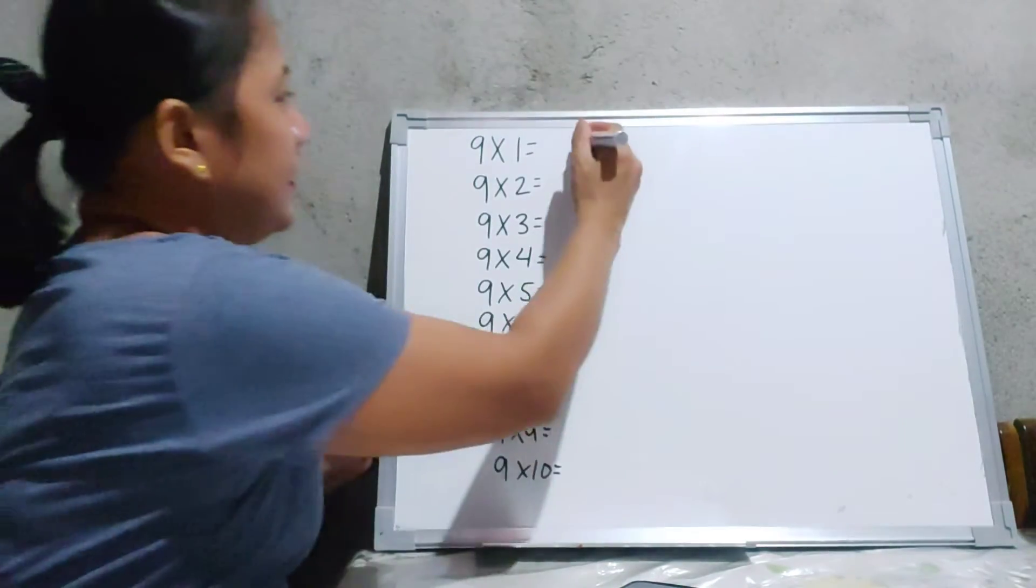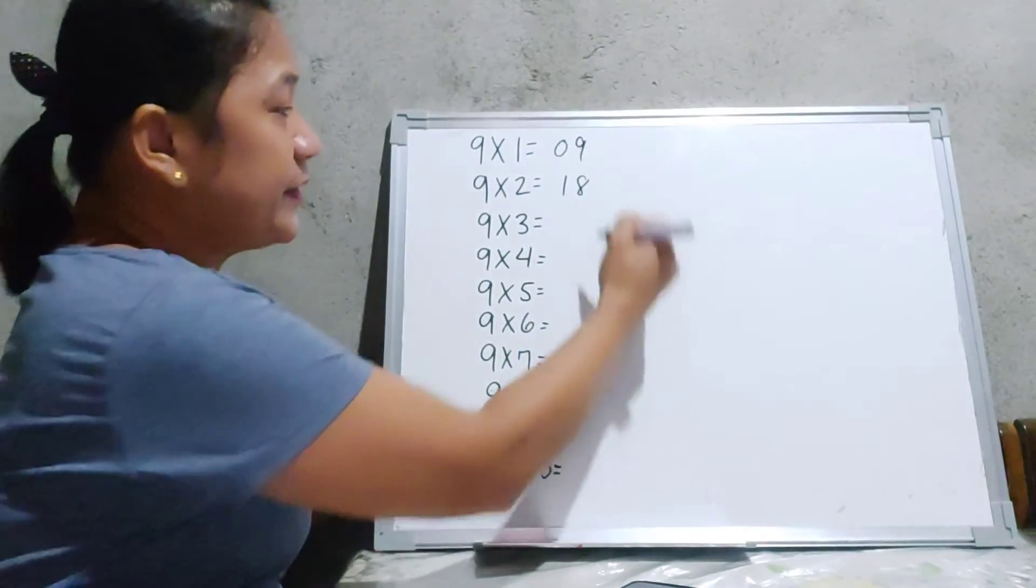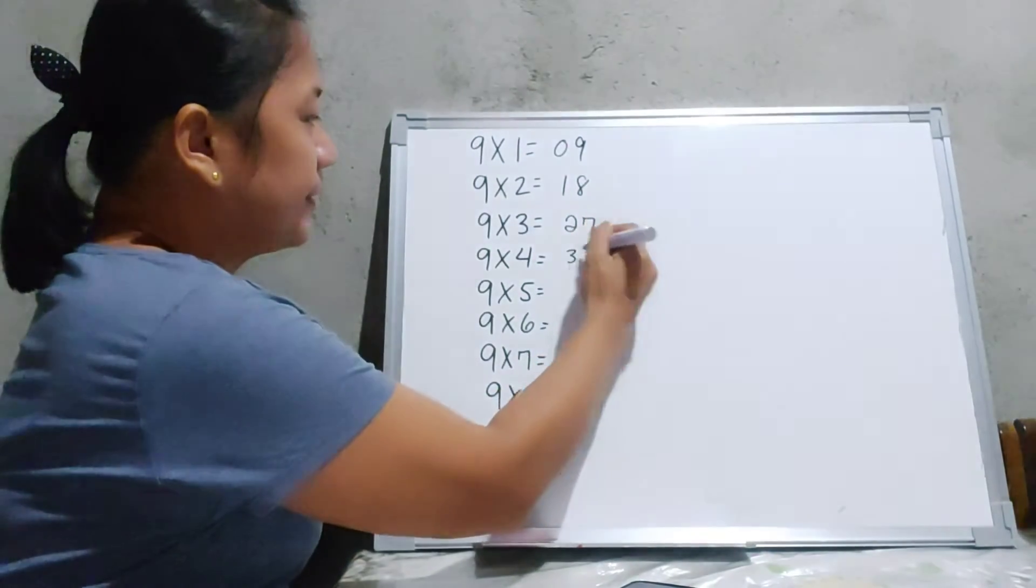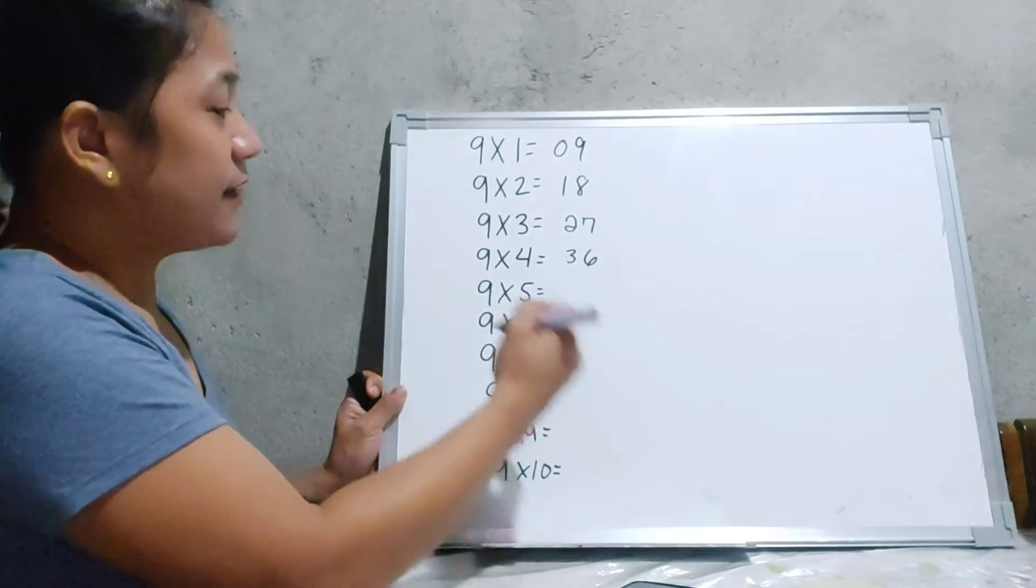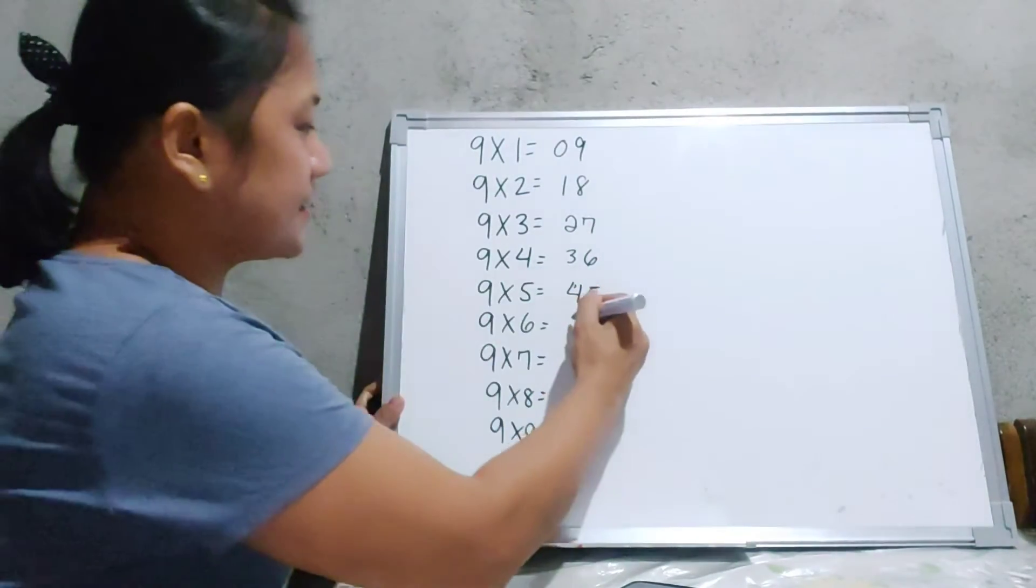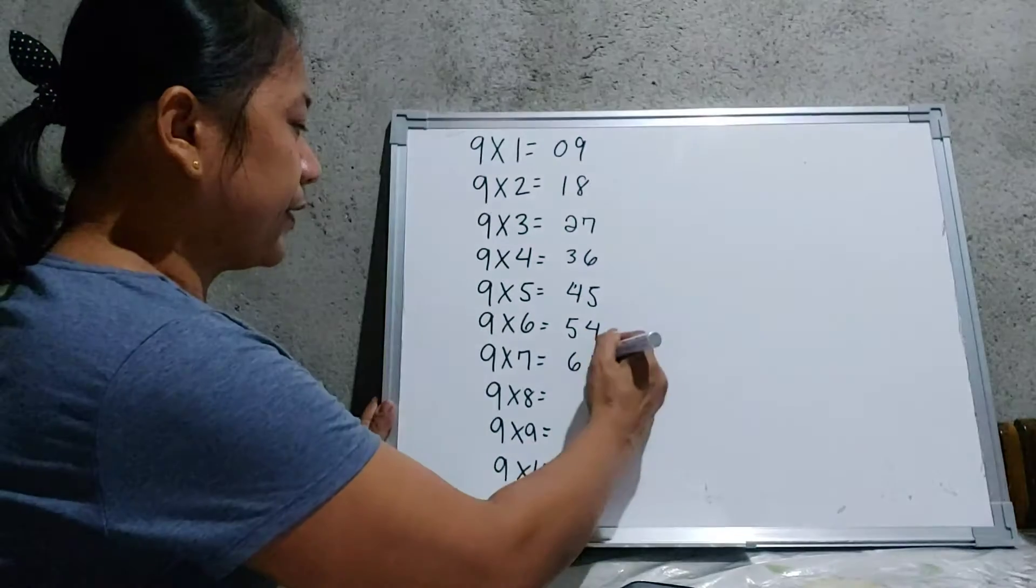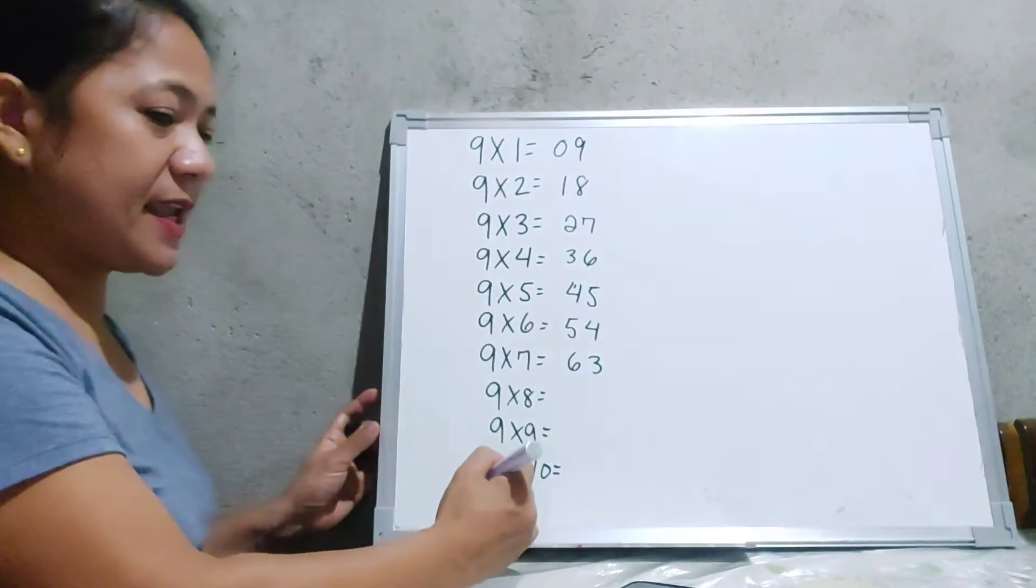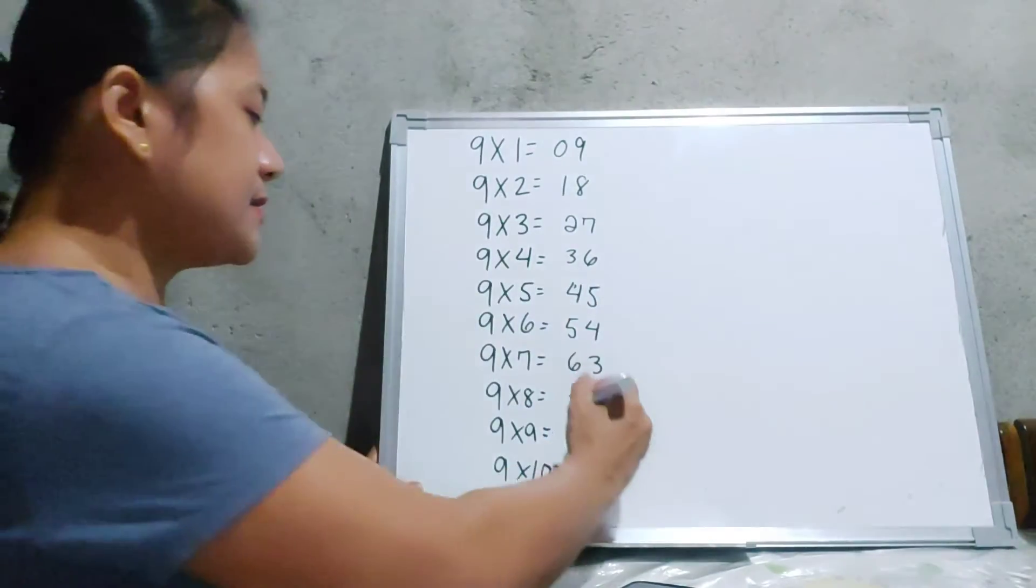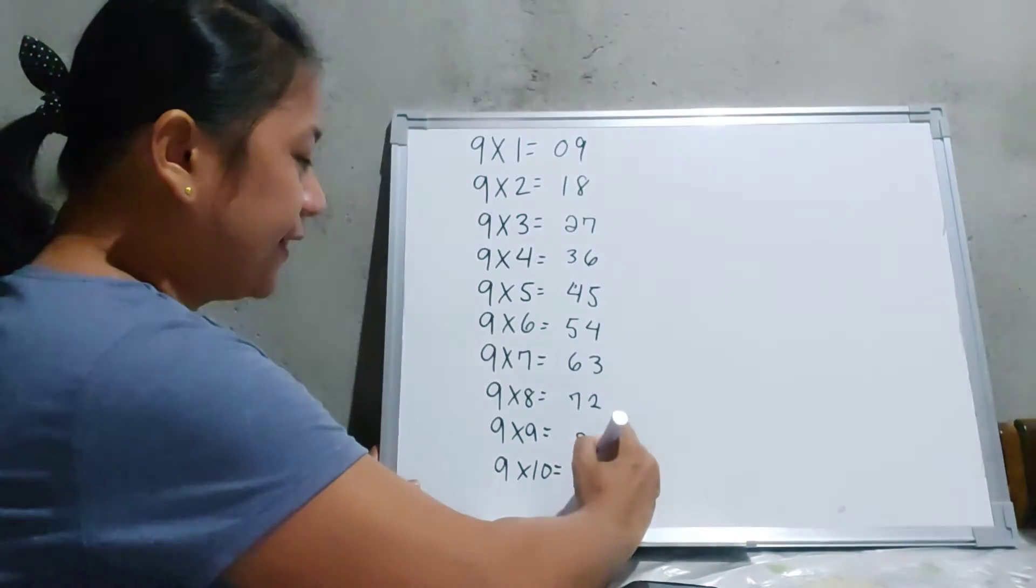9 times 1 is 9. 9 times 2 is 18. 9 times 3 is 27. 9 times 4 is 36. 9 times 5 is 45. 9 times 6 is 54. 9 times 7 is equal to 63. 9 times 8 is equal to 72. 9 times 9 is equal to 81. And finally, 9 times 10 is equal to 90.